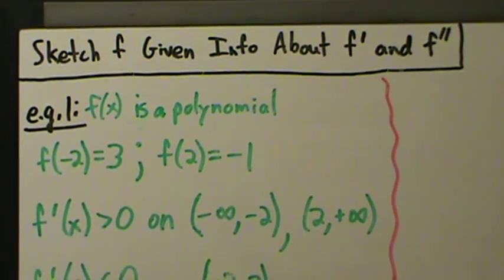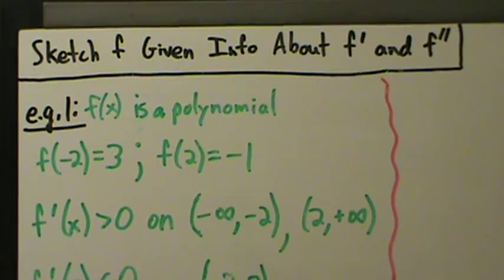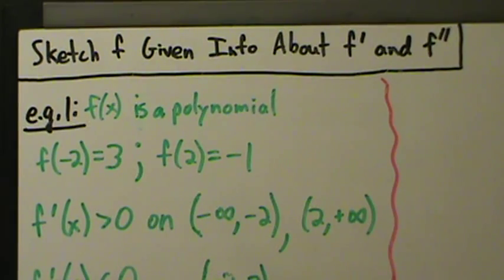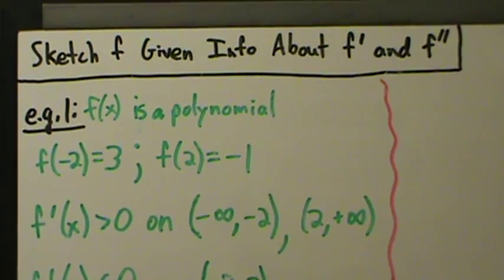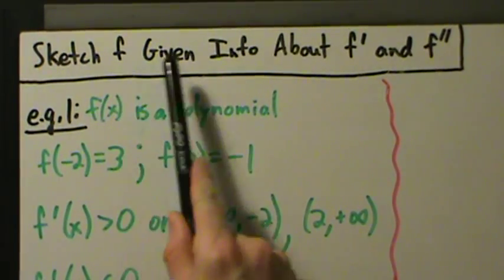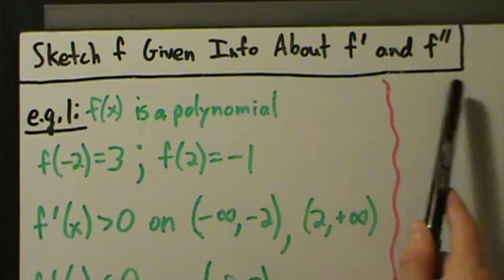In this video we're going to do an example that uses what we talked about in the last video, where we made that chart about what f looks like if f' is positive and f'' is positive and so on. What we have here is we're going to sketch a graph of a function f given information about the first and second derivatives.